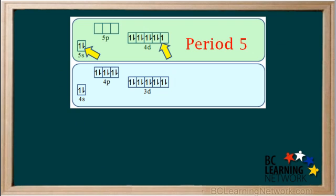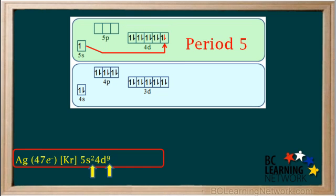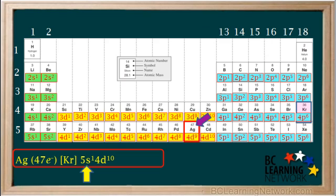So, one electron from the 5s orbital is promoted to the last 4d orbital to pair up with the single electron that was originally in that orbital. The resulting completely filled set of 4d orbitals, with a total of 10 electrons, makes this configuration very stable. So, instead of ending in 5s2, 4d9, the configuration for silver ends in 5s1, 4d10. So the actual core notation of silver is krypton 5s1, 4d10.